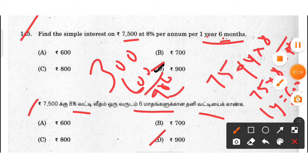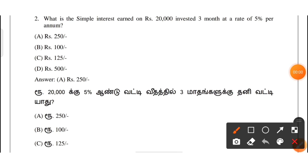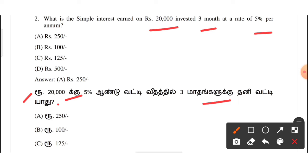Now let's look at the next question. We will learn about the simple interest earned on ₹20,000 for 3 months and the rate is 5% per annum.